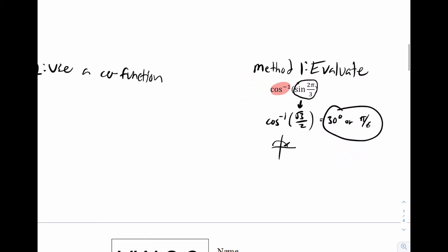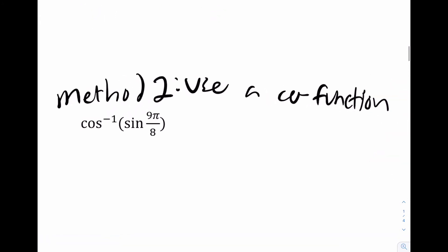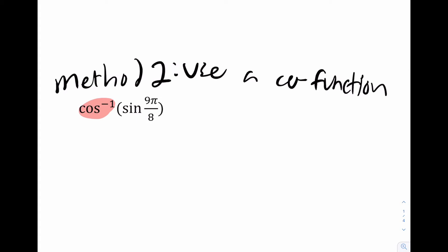Now, it's limited because what happens if you could not evaluate it? Well, in that situation, you're going to have to use method number two. In this one, we can see it's the same idea, right? The inverse on the outside. However, none of you could figure out what sine nine pi over eight is in your head. That'd be pretty difficult.